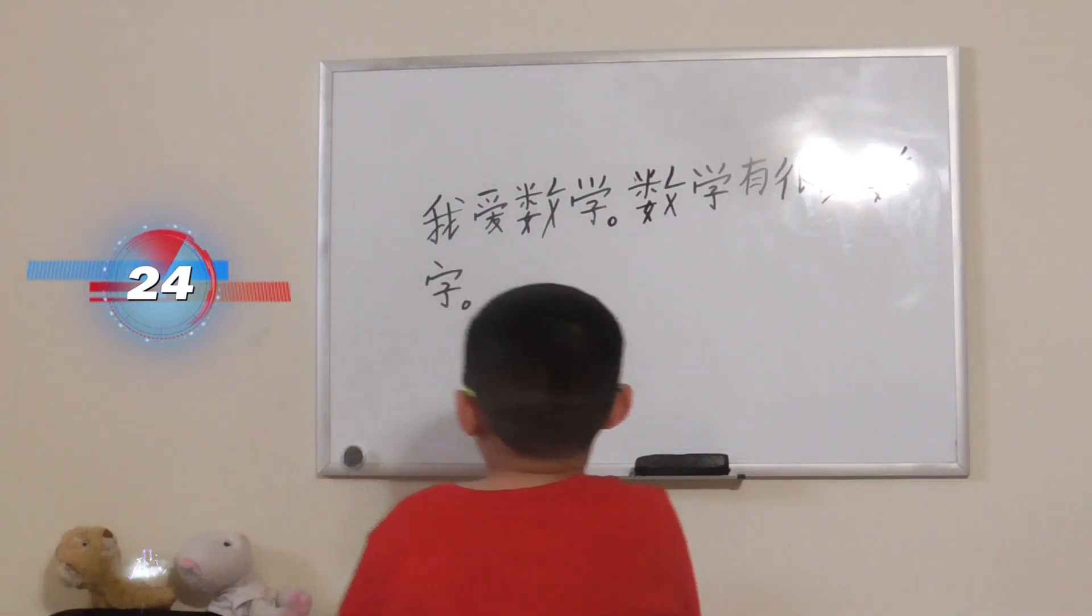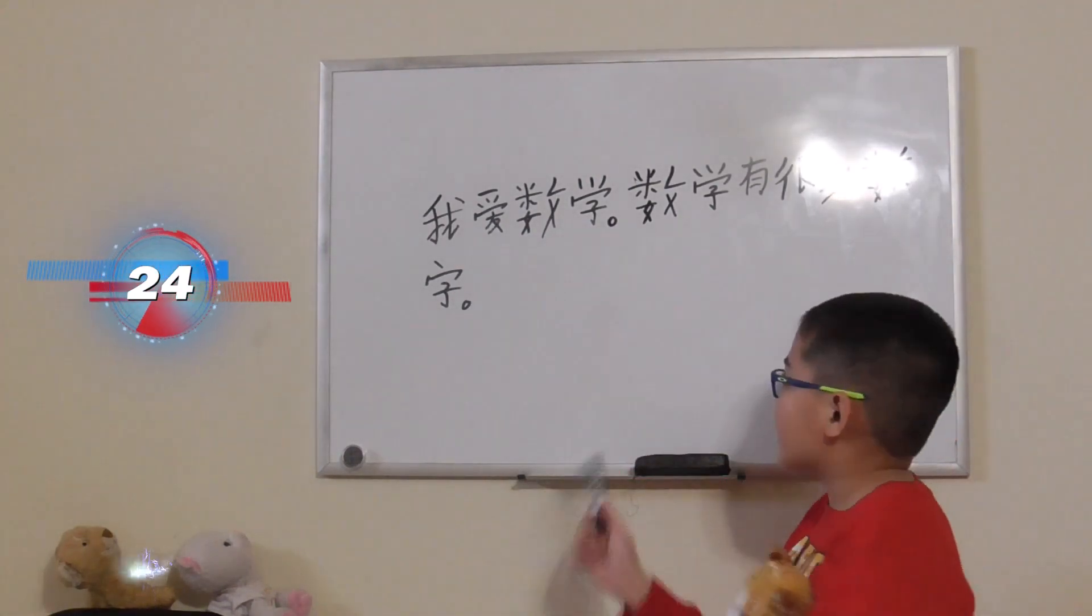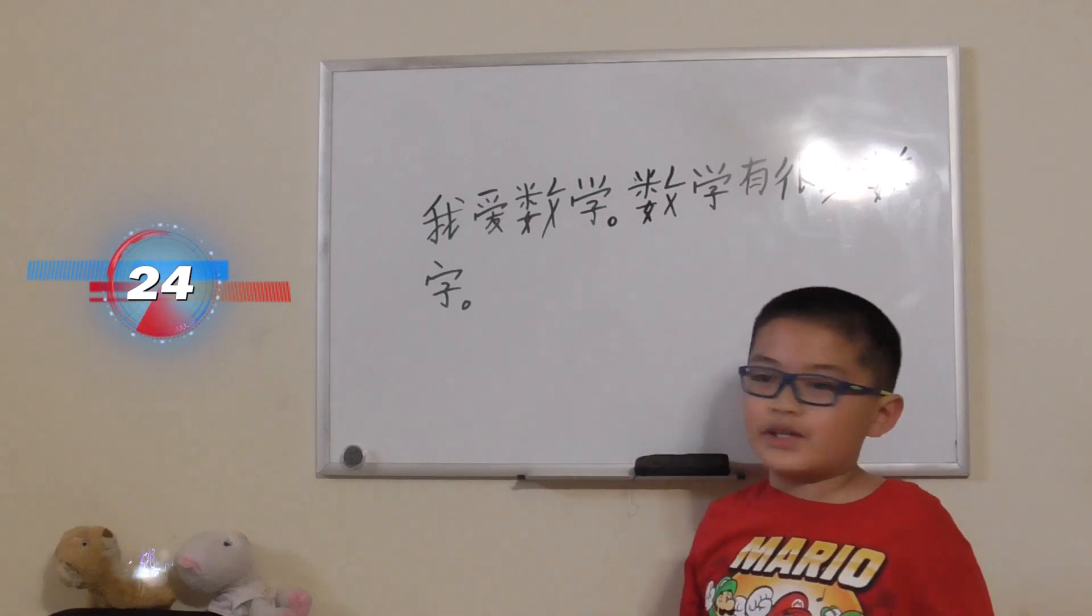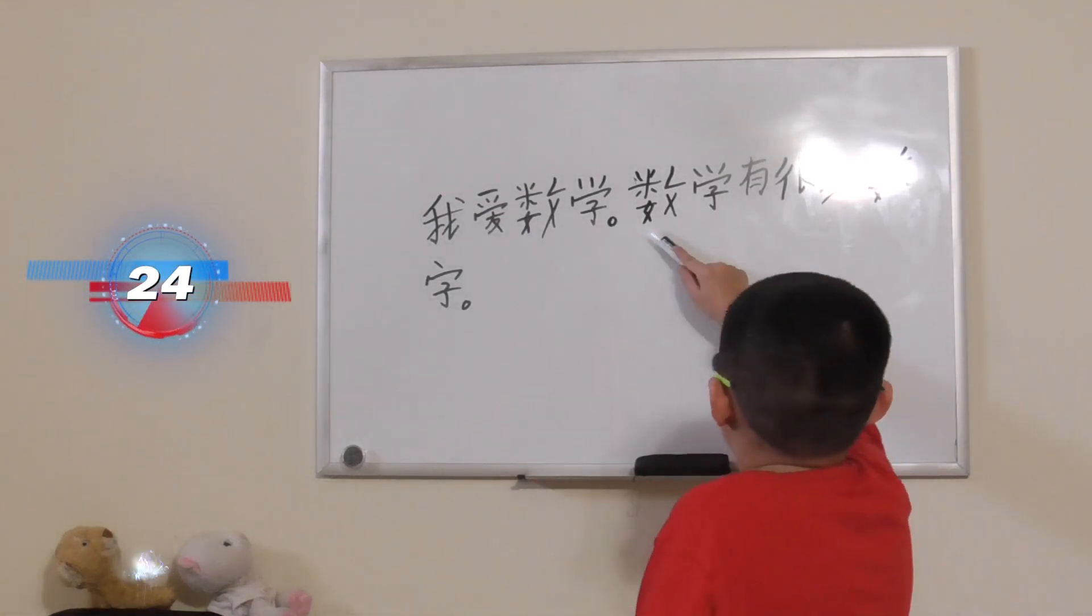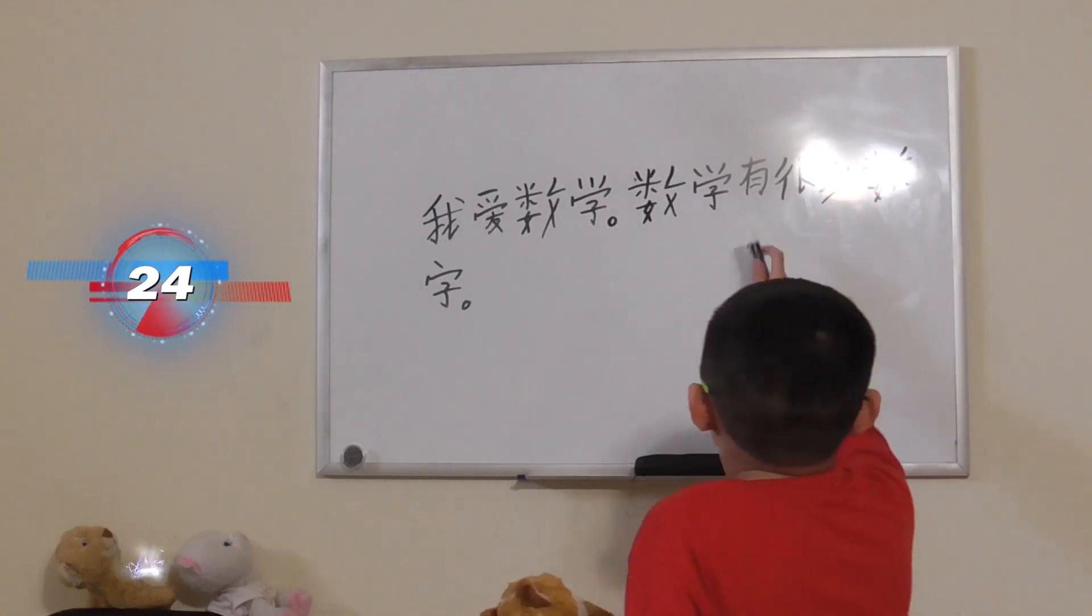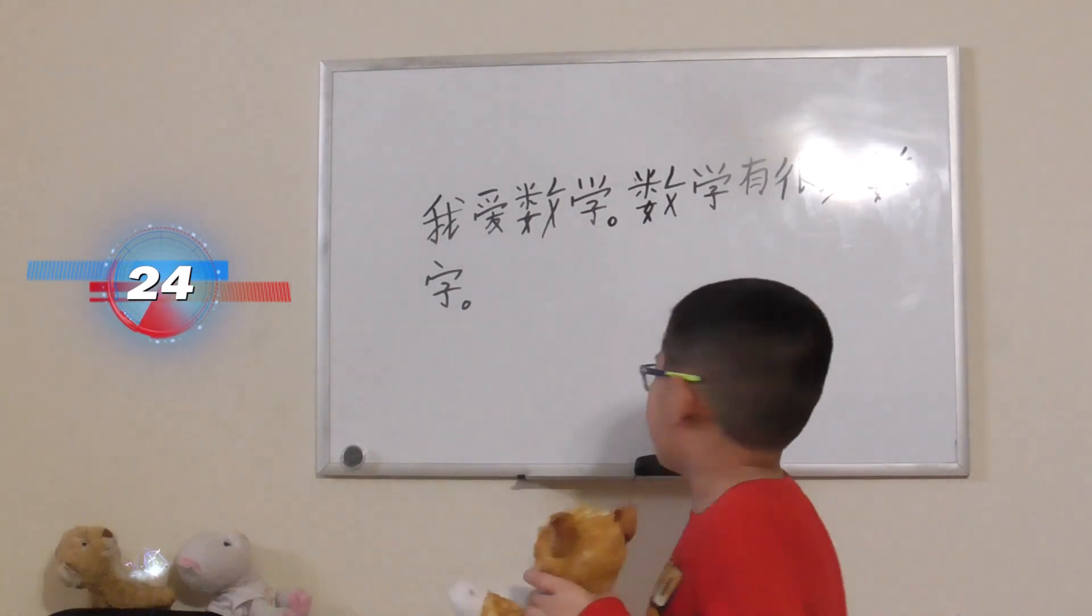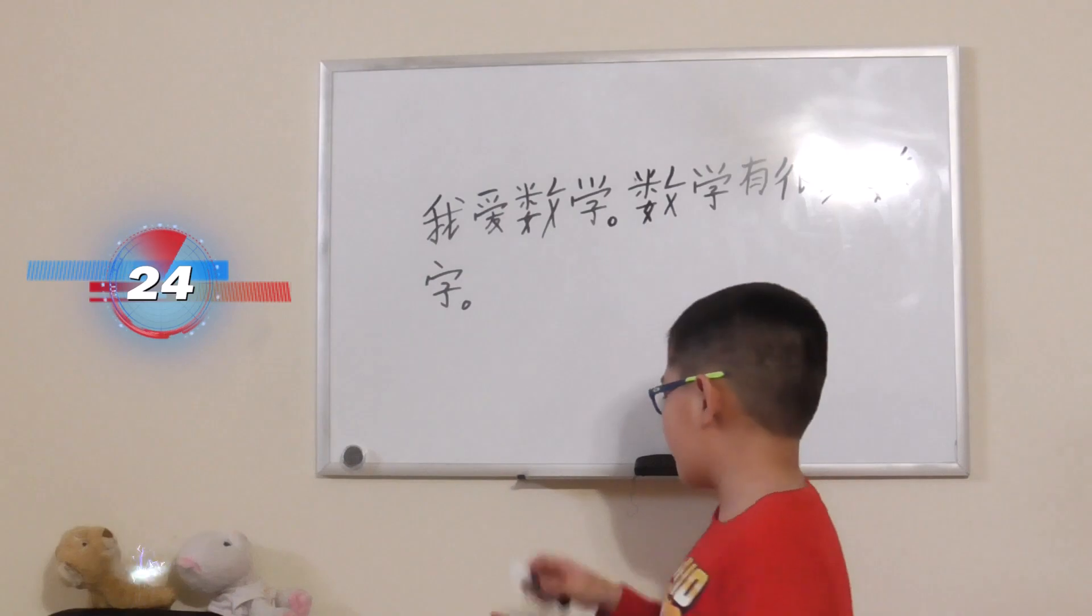Now let's review. 我 means I or me. 爱 means like or love. 数学 means math. 数 means number and 学 means discipline. 有 means has or have. 很 means very. 多 means many. 数字 means number.